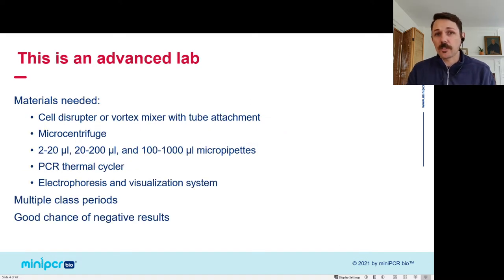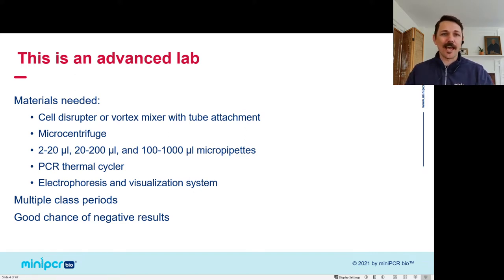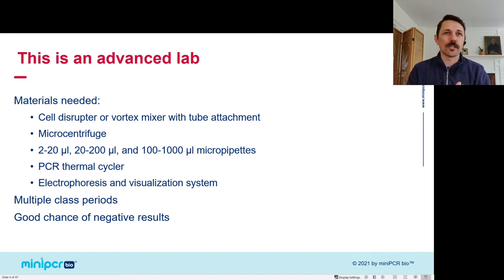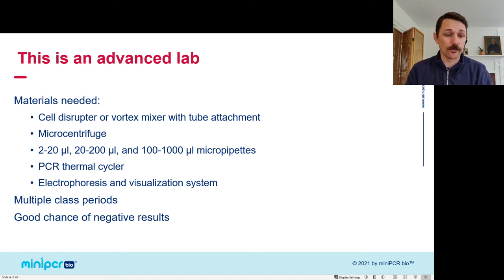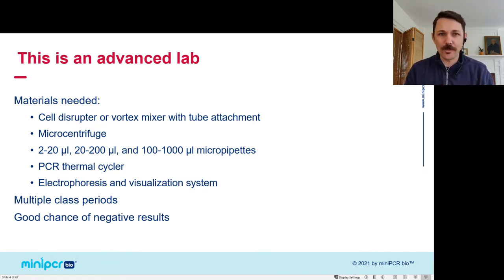I want to note that what we're talking about today is a fairly advanced lab. At MiniPCRBio, we try to make robust labs that work great in a 45-minute lab period with eight lab groups — if you're looking for that, we have lots of labs like that. This is a little less so. It requires more advanced equipment: a cell disruptor, a vortex mixer, a microcentrifuge, more micropipettes. It's going to take several lab periods. And importantly, there's a good chance you get negative results — that's actually a perfectly valid and good result, though it can be disappointing if it's the one molecular lab you're doing for the year.